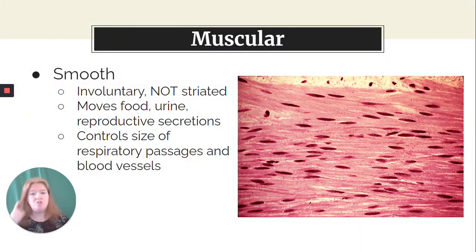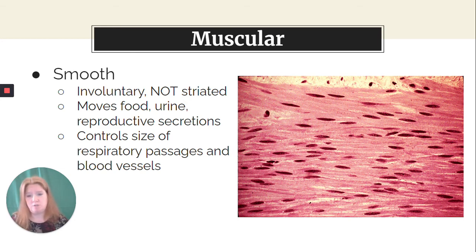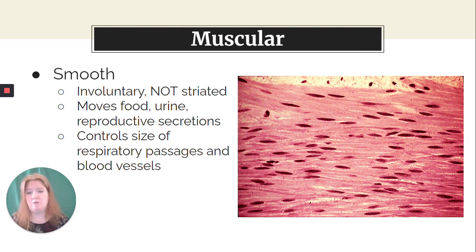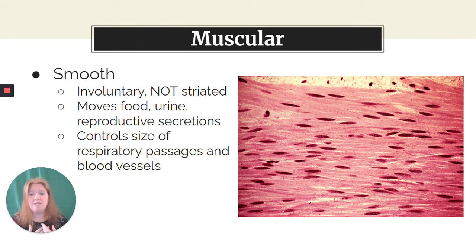Smooth muscle tissue is involuntary — I don't have control over it, it is not striated, and I can't choose to do it. Smooth muscle moves food and urine and reproductive secretions throughout your body — food through your digestive system, urine through your excretory system, reproductive secretions out of your body. It also controls the size of your respiratory passages and blood vessels. If I'm cold and my blood vessels need to get constricted to conserve heat, my smooth muscles are responsible for that.